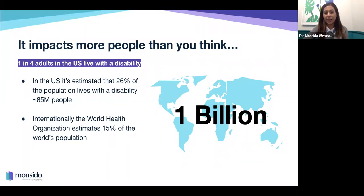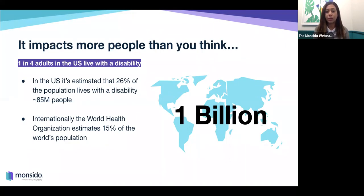Web accessibility and disabilities affect more people than you think. In the US, it's estimated that 26% of the population lives with a disability — that's 85 million people. Internationally, the World Health Organization estimates that 15% of the world's population lives with some type of disability. When you consider those numbers, not having an accessible website means you could be losing out on a huge market of people who aren't able to access your site.